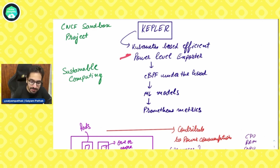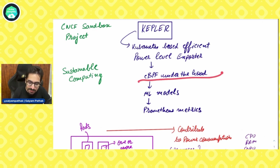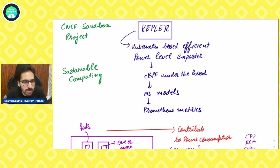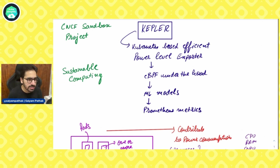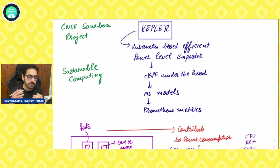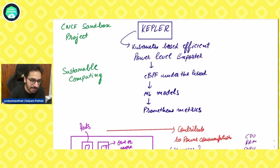Kepler stands for Kubernetes-based Efficient Power Level Exporter and it uses eBPF under the hood — a very powerful technology. eBPF lets you run your own programs in the kernel. I also discussed this in the Inspector Gadget video. It is a superb technology and that is what is also powering Kepler.